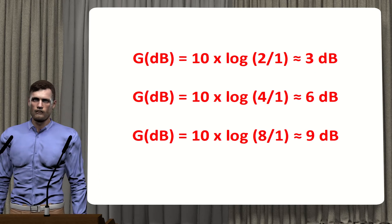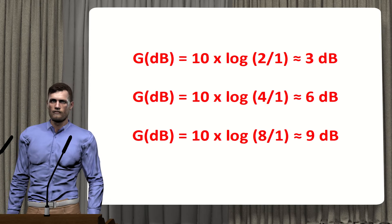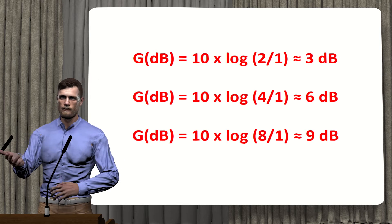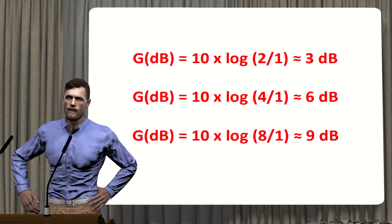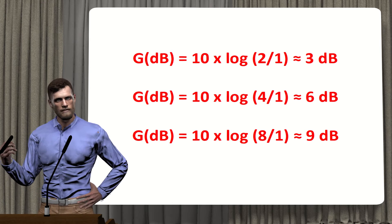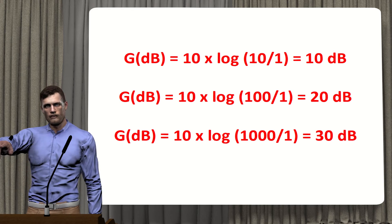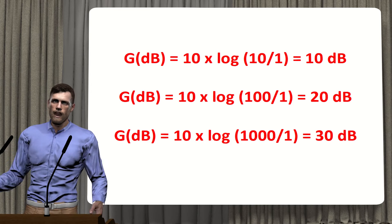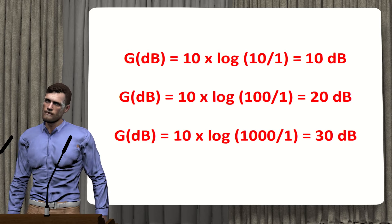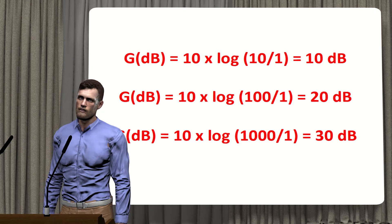Let's look at some examples of values obtained using decibels. If the output power is twice the input, we have a gain of approximately 3 dB. If it is four times the input, the gain is approximately 6 dB. If it is eight times the input, about 9 dB — every time the output power doubles, gain increases by 3 dB. If the output is ten times the input, gain is 10 dB; one hundred times gives 20 dB; one thousand times gives 30 dB — each time output power is multiplied by ten, gain increases by 10 dB.